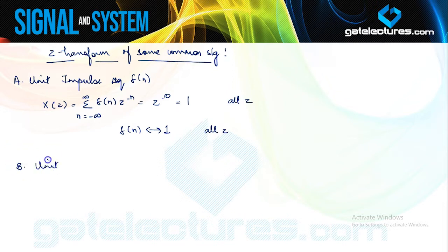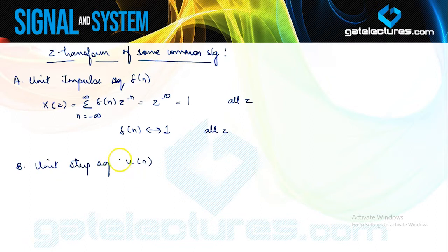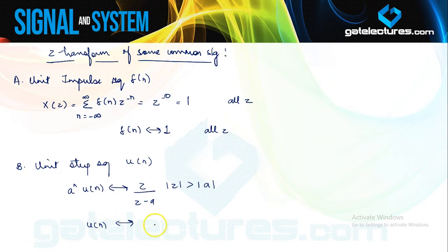The next signal is the unit step sequence u(n). We have already discussed Z-transform for a^n u(n). If you just put a equal to 1, we saw that the Z-transform was z/(z−a) with |z| > |a|. Putting a=1 gives the Z-transform of u(n) as 1/(1−z^{−1}), or equivalently z/(z−1), with ROC |z| > 1.